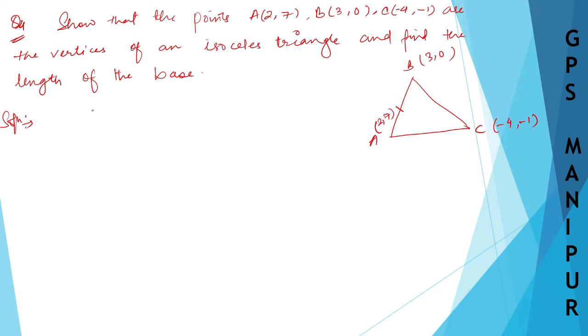Now we need to show these points are isosceles triangle. So here, AB - let us find out AB. In order to find out AB, AB is equal to root over formula. Let me write down here. X1 minus X2 whole square plus Y1 minus Y2 whole square.